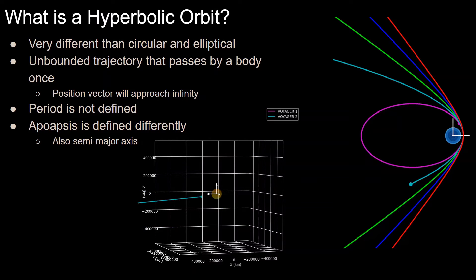Also, apoapsis is no longer the farthest point from the orbit, since that point is infinity for any hyperbolic orbit, so its definition changes. This also means that the definition of the semi-major axis changes, and it actually turns negative.